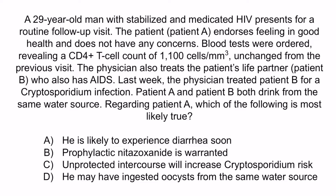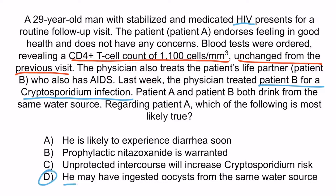From the question stem, you should notice that patient A has well-controlled HIV — his CD4 count is 1,100, which is high, and the level hasn't changed from the previous visit, indicating it's stable. Patient A, while having HIV, does not have AIDS and is unlikely to experience an AIDS-defining infection. Conversely, patient B has full-blown AIDS because patient B was treated for a cryptosporidium infection. The correct answer is choice D: patient A may have ingested oocysts from the same water source. Recall that cryptosporidium infections occur only when the CD4 count drops below 100, and patient A has a high CD4 count of 1,100, making a cryptosporidium infection unlikely even though he likely ingested the same oocysts as patient B.